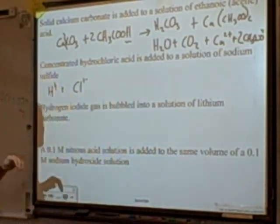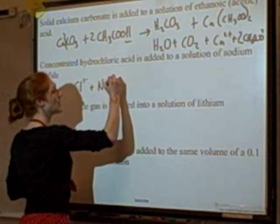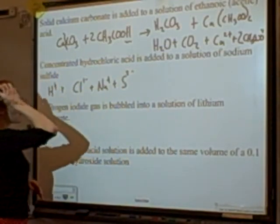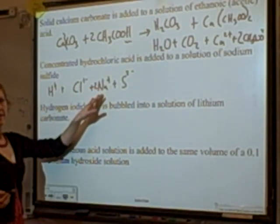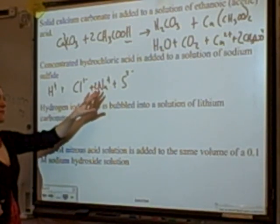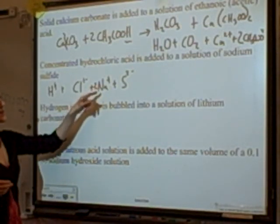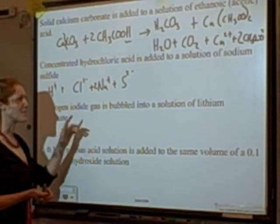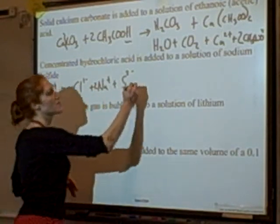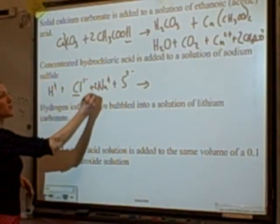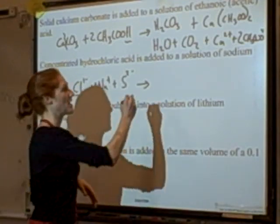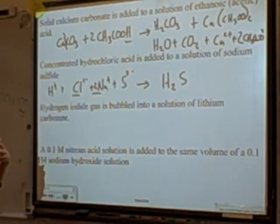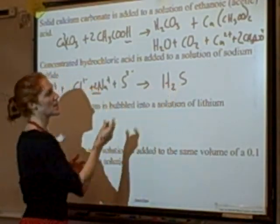Alkali metal ions like sodium are spectators — they're soluble and won't be reduced. Chloride is often a spectator too. H+ goes with the sulfide ion; I'll need two hydrogens for one sulfide. It's a weak acid, so I write it all together as H2S. The driving force of the reaction is that these ions come together and don't dissociate.